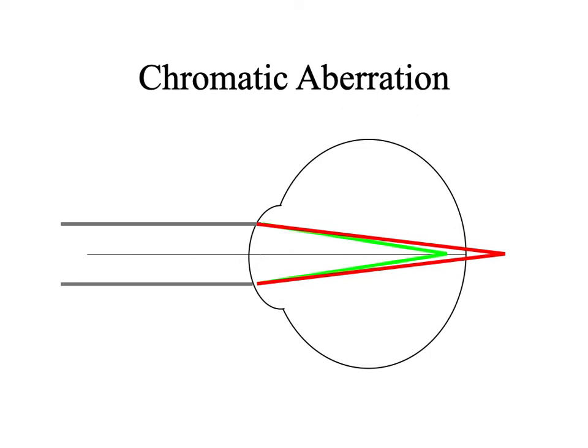That's why when you do the duochrome test, you want to ask patients not which side is easier to read or which side is brighter, but which side has the darker, sharper letters. For an emetropic patient, green and red are going to be equidistant to the retina, equally blurry. In a myopic patient, both rays of light converge anterior to the retina, but the red is closer to the retina. So in an uncorrected or undercorrected myope, red is going to be closer to the retina — the black letters on the red background are going to have more definition than the letters on the green background.